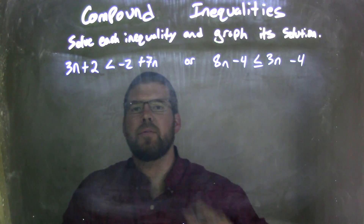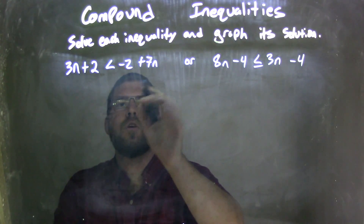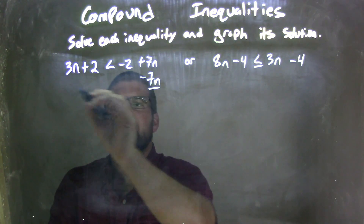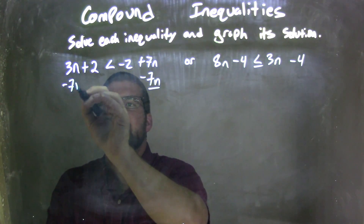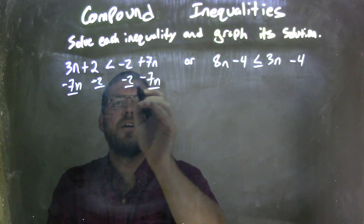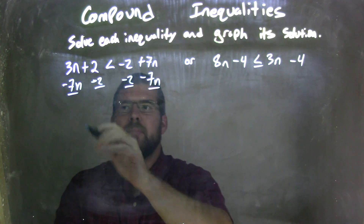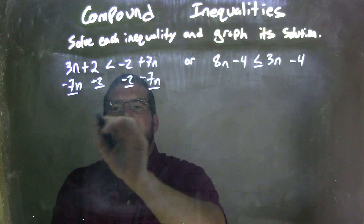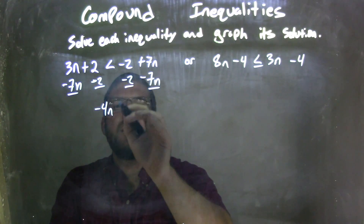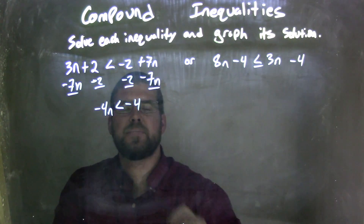My first step is to solve both individually. I'm going to subtract 7n from both sides, and subtract 2 from both sides — moving n to the left, numbers to the right. 3n minus 7n is negative 4n, which is less than negative 2 minus 2, which is negative 4.